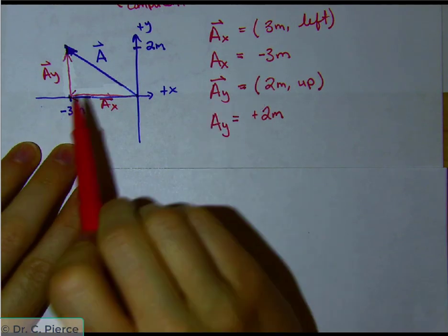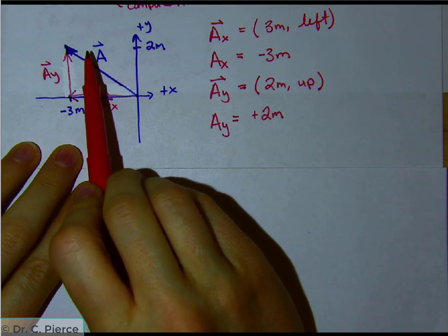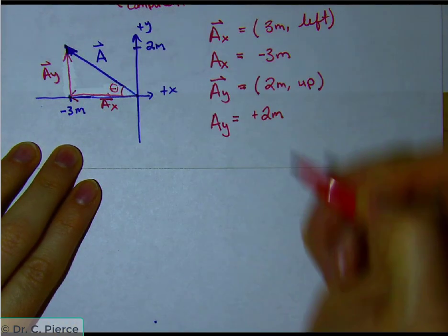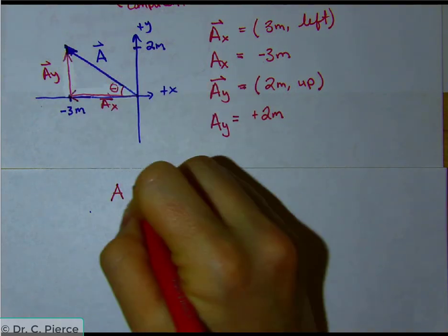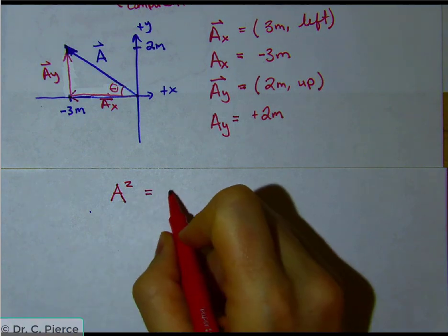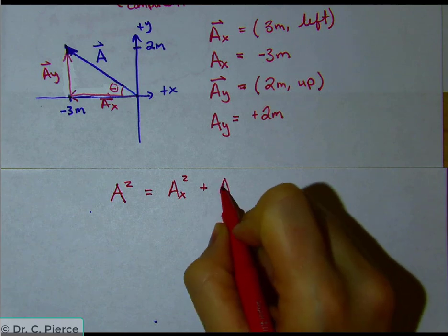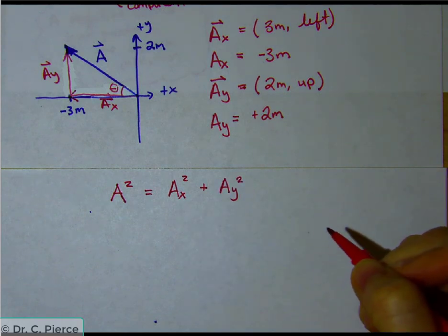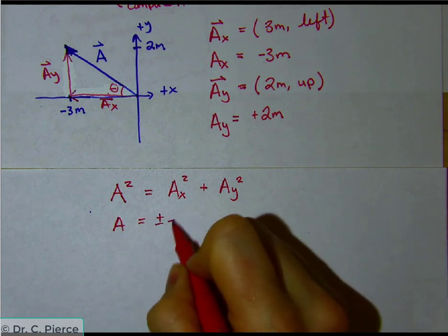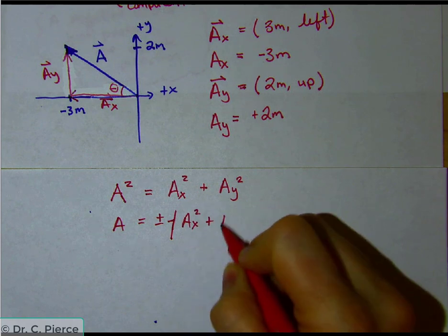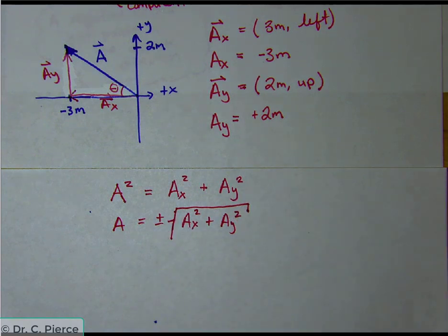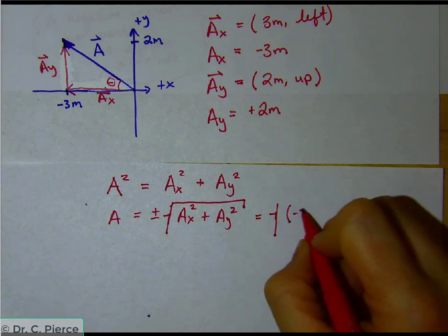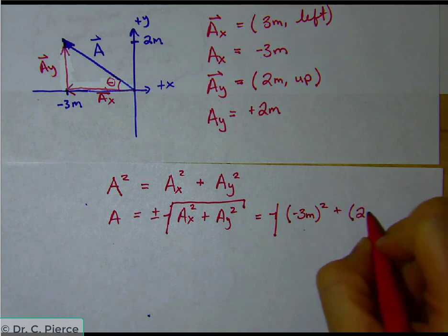Now let's use the components to solve for the magnitude of a — its length — and also the angle theta. Using the Pythagorean theorem on this triangle: a squared equals ax squared plus ay squared, so a equals the square root of ax squared plus ay squared. We take the positive root since a negative length doesn't make sense. That gives us the square root of (negative three meters) squared plus (two meters) squared.